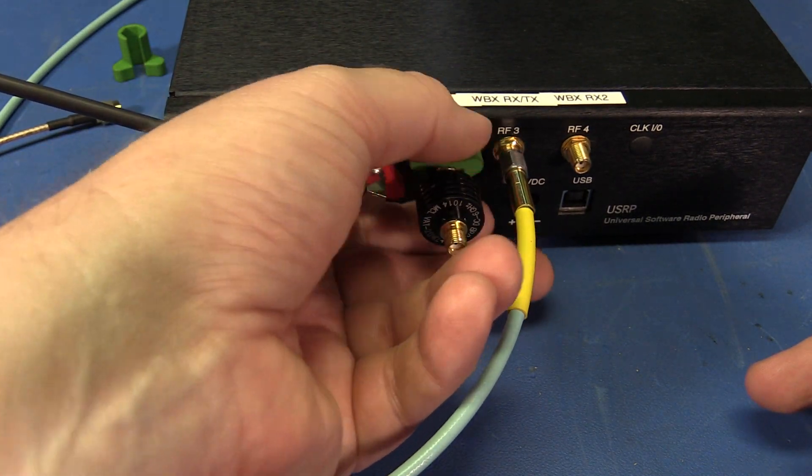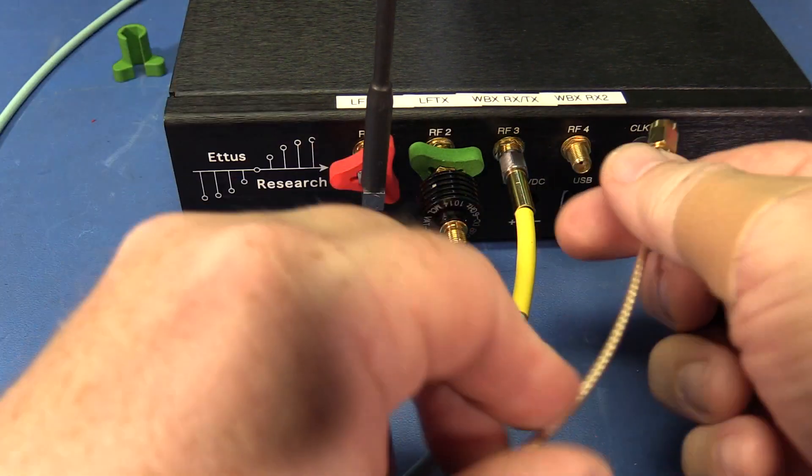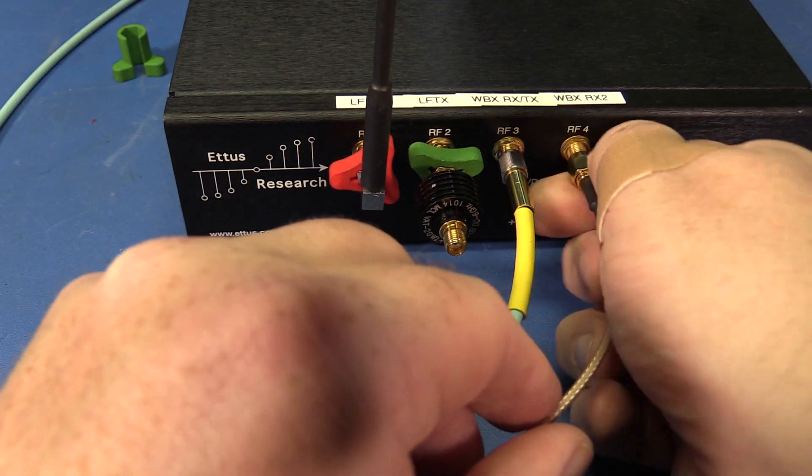And you can't use it on wide things like this SMA attenuator. So it doesn't replace all tools, but it is a very handy way to get into a tight spot and tighten or loosen an SMA connector.